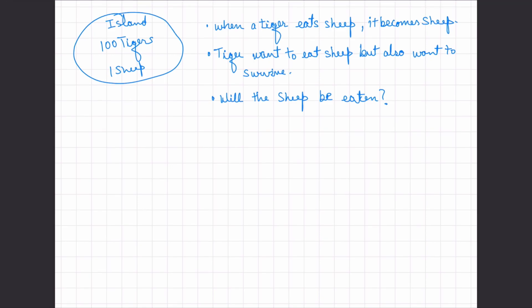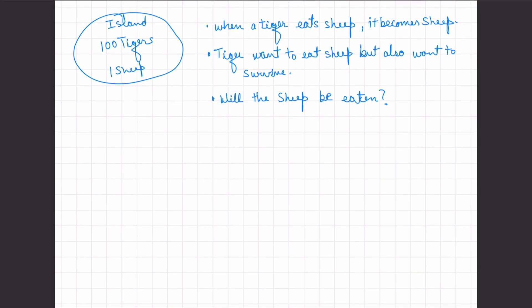So as you may have thought, tigers would try to eat sheep, but here's a trick. It's a magical island. If a tiger eats a sheep, they themselves become a sheep.